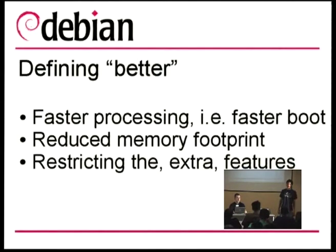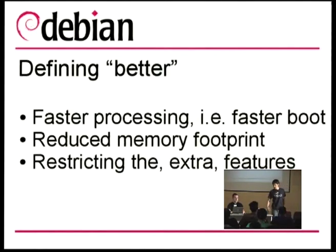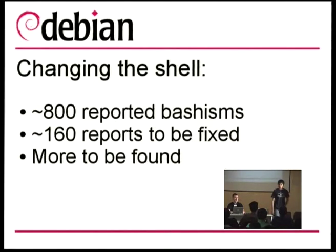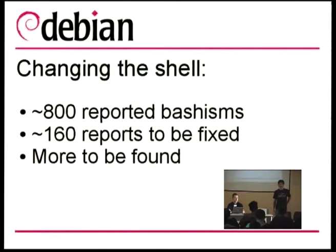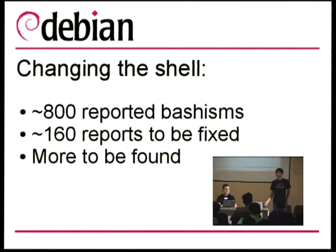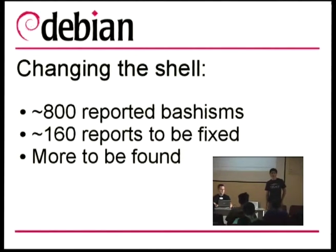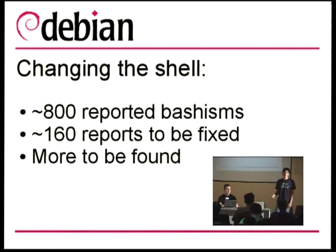The fact that it is stricter is helpful for the ported architectures, because they actually don't use bash nor dash. For example, Embedded Debian uses busybox sh, which is even more strict than dash. I've been working on filing bug reports to fix bashisms. I've reported over 800 reports, 800 have been fixed, and there are about 120 that still need to be fixed. There are also some bashisms hidden in source code of C executables, Perl scripts, and Python scripts that use the system call.